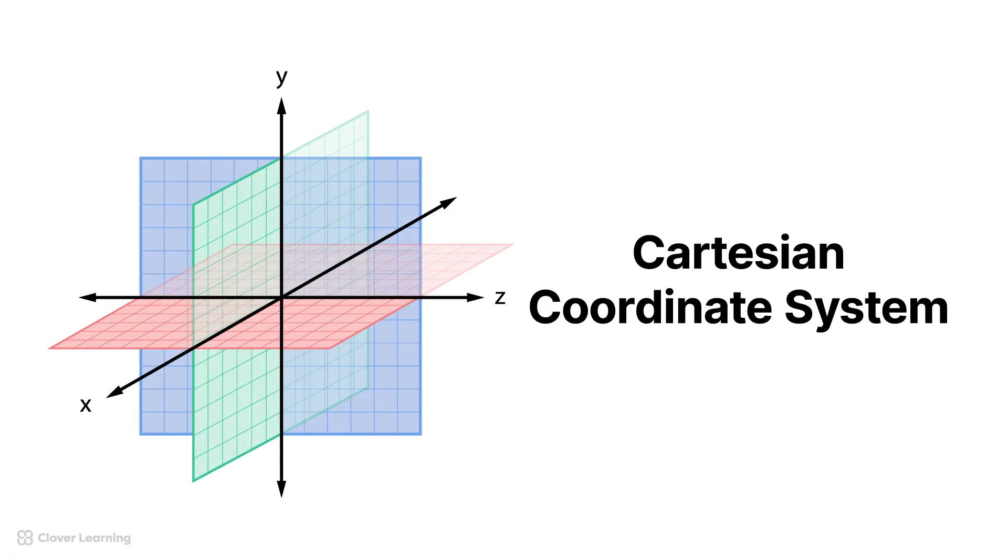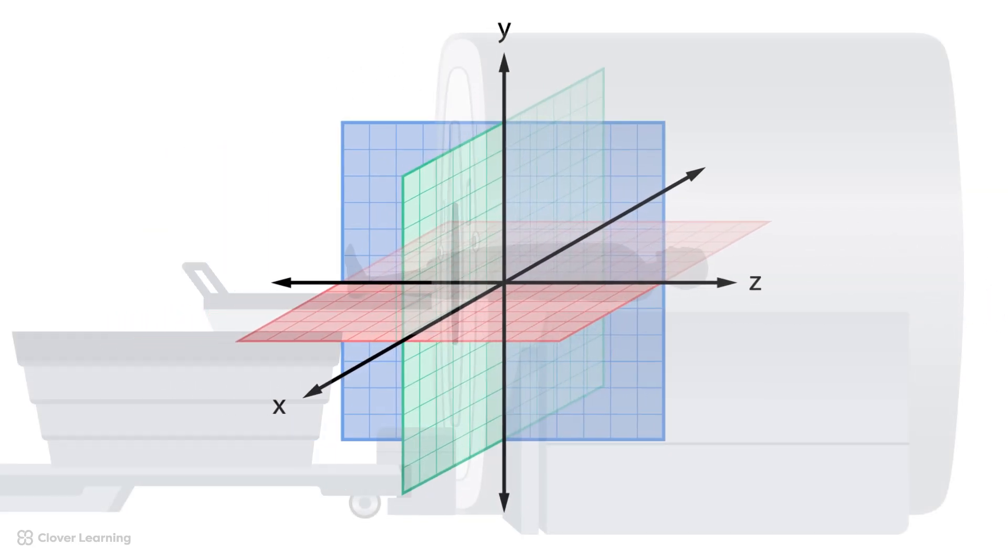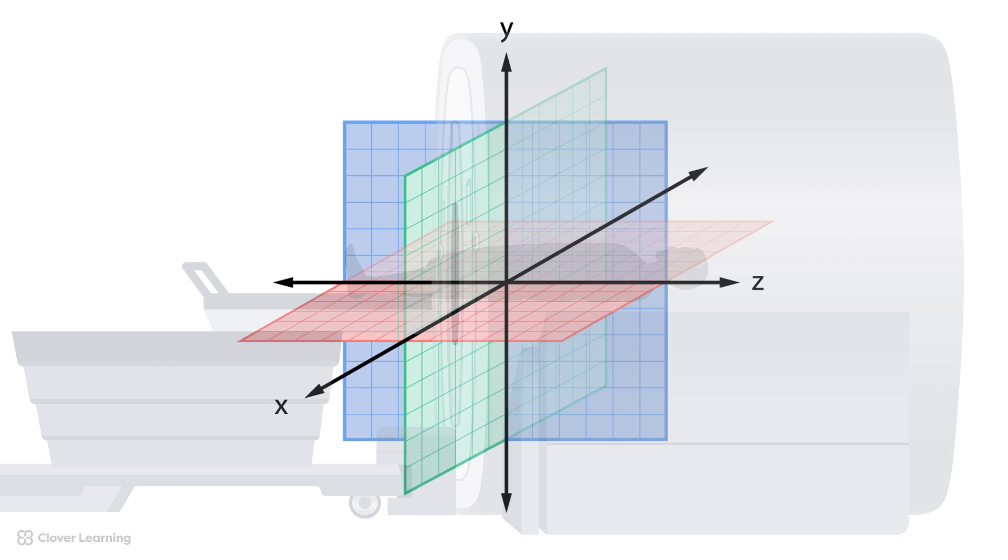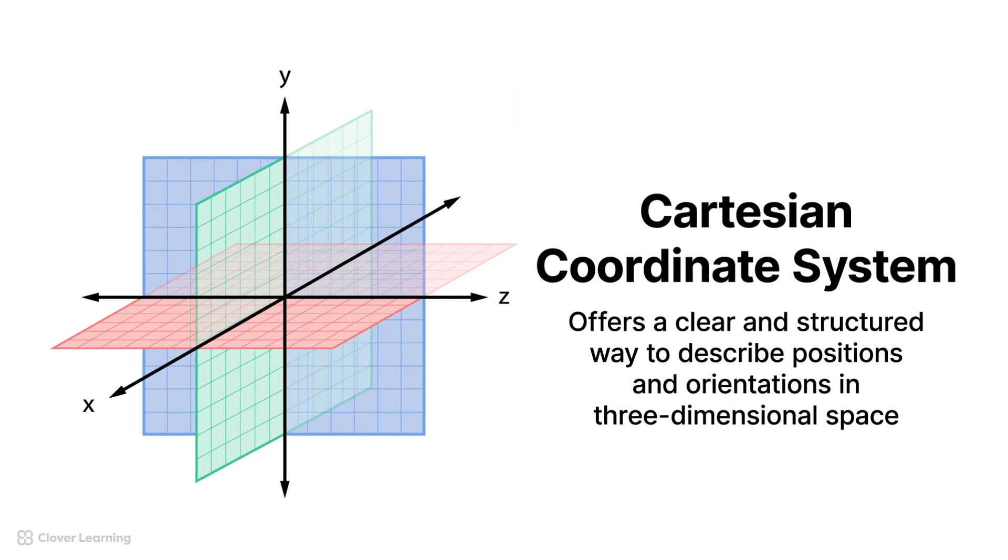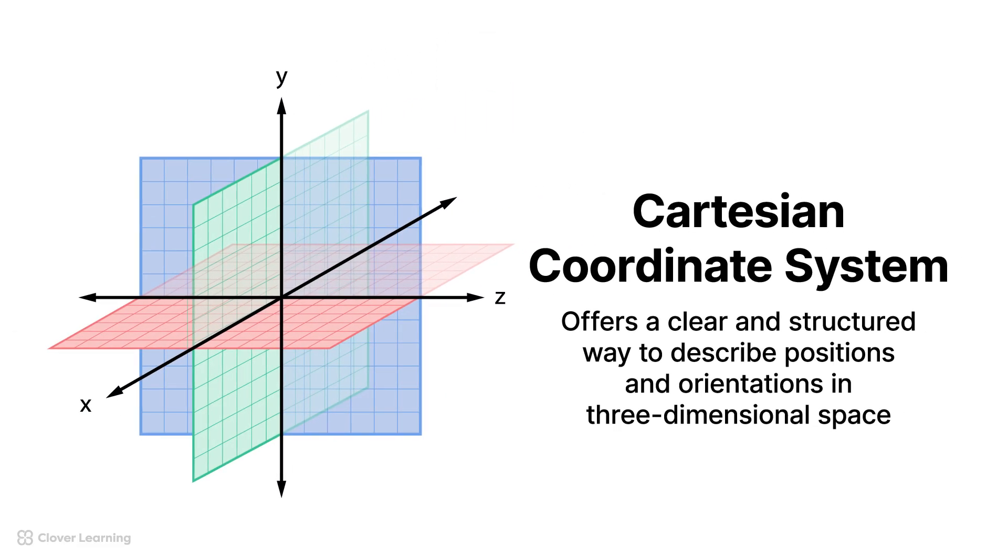When we discuss the physics of MRI, we may use what's called the Cartesian coordinate system. This system uses three axes, X, Y, and Z, to locate points in space. In MRI, it helps us understand how magnetic fields are applied, the behavior of the hydrogen nuclei, and how the body is segmented into slices for detailed imaging, because it offers a clear and structured way to describe positions and orientations in three-dimensional space.